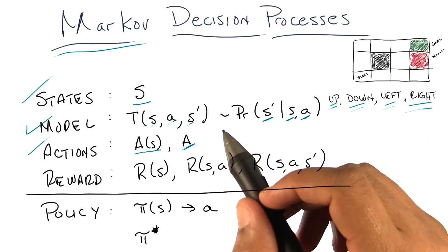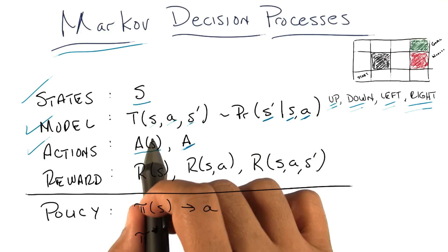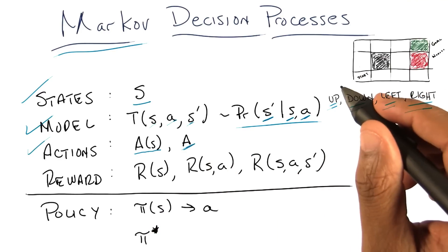And it can be probabilistic or it's not probabilistic? It can definitely be probabilistic. Transition models are, by their very definition, probabilistic. Gotcha.